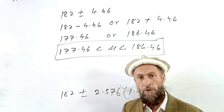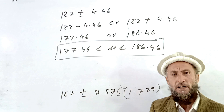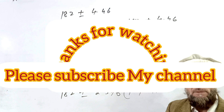So the 99% confidence interval for the population mean is approximately [177.54, 186.46]. Thank you very much for watching. This is the easiest method I have used so that every student can simplify and clearly understand the example. Thank you very much, please subscribe to my channel.